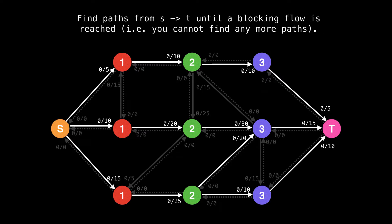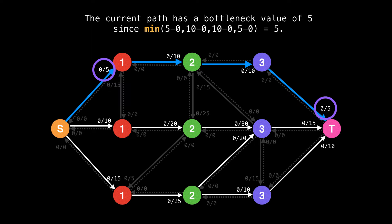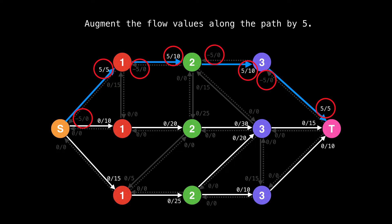Step two of the algorithm is to find paths from s to t until a blocking flow is reached. That is, we cannot find any more paths through the level graph. So we start at the source and do a depth first search on the edges of level graph until the sink is reached. So we found our first augmenting path and the bottleneck value along this path is five, since five is the smallest remaining capacity. So update the flow values along the path by five.